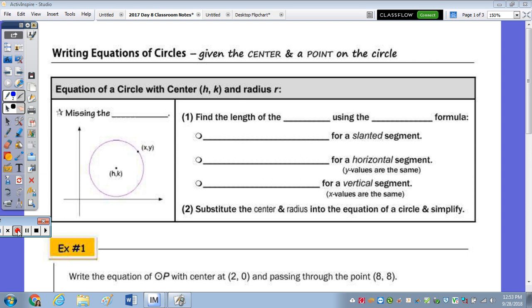We need the center and radius in order to write it. So in this case here, when you're given a center and a point on the circle, what don't you know? Here's the center, here's the point on the circle. We're missing the radius.